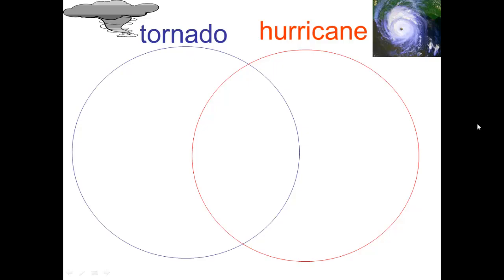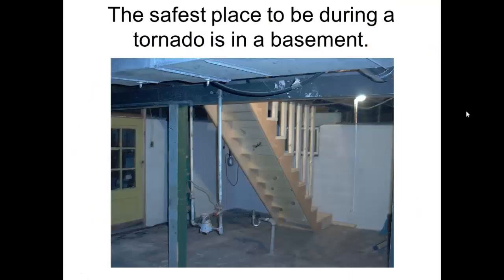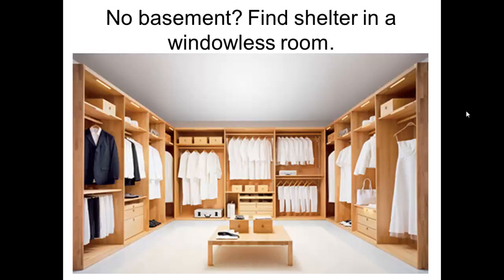Here's your notes page. You will be comparing tornadoes and hurricanes — characteristics of tornadoes go in one section, hurricanes in another, and any characteristics they have in common go in the middle. The safest place to be during a tornado is in a basement. If you do not have a basement, go into a windowless place in the center of the building or house you are in.